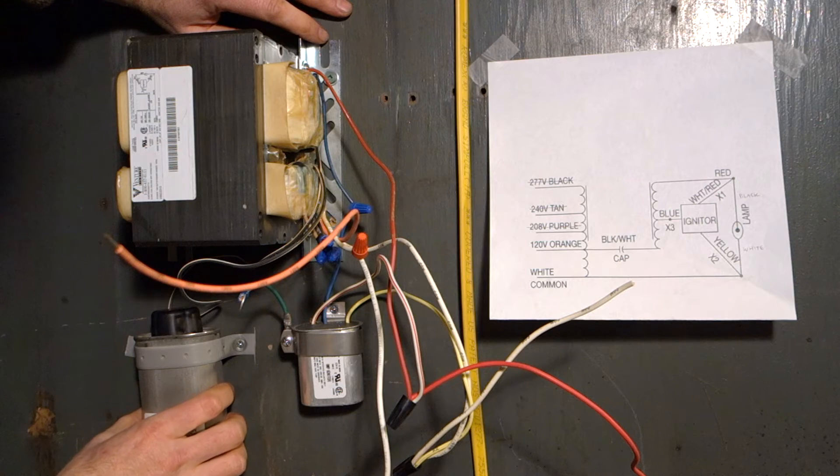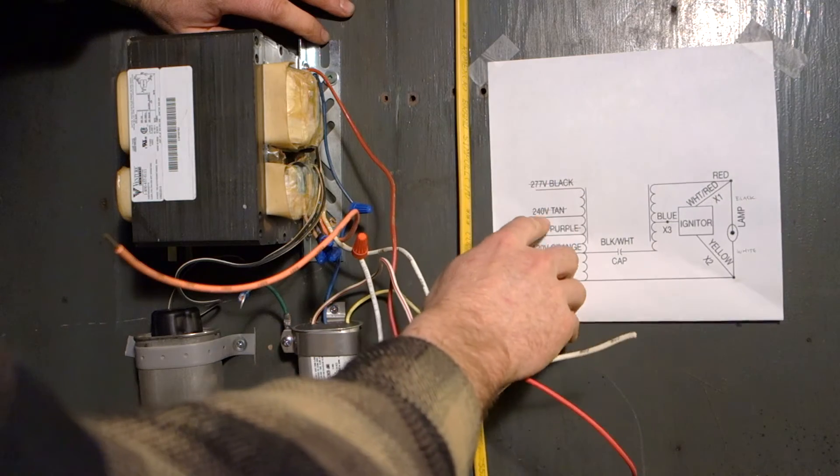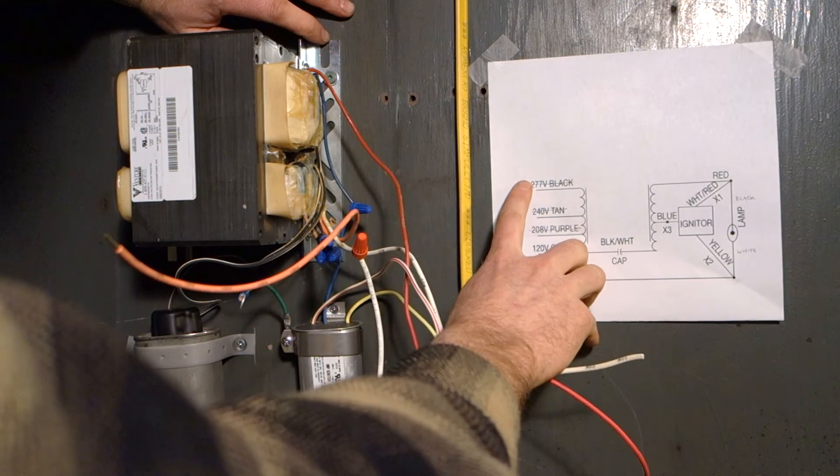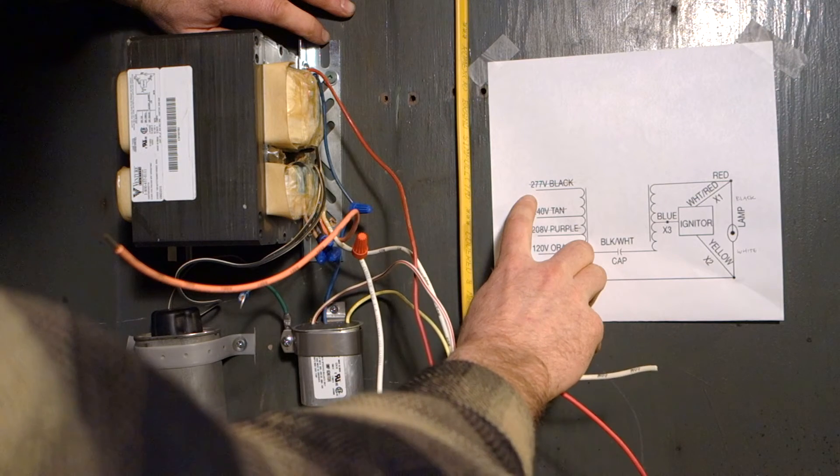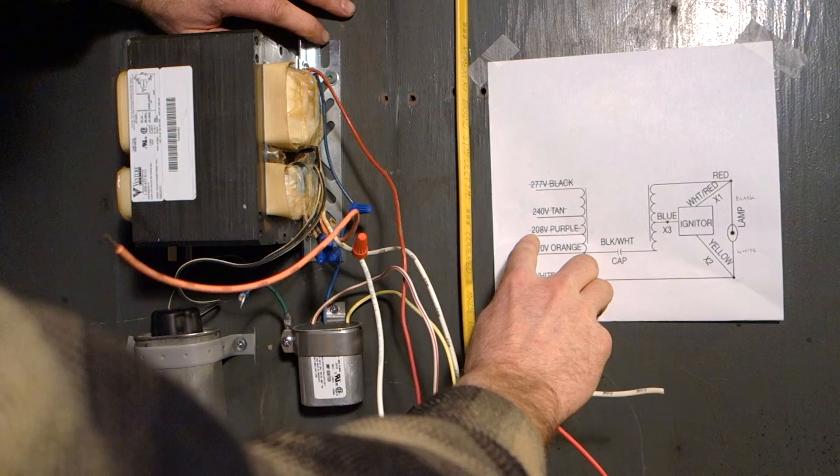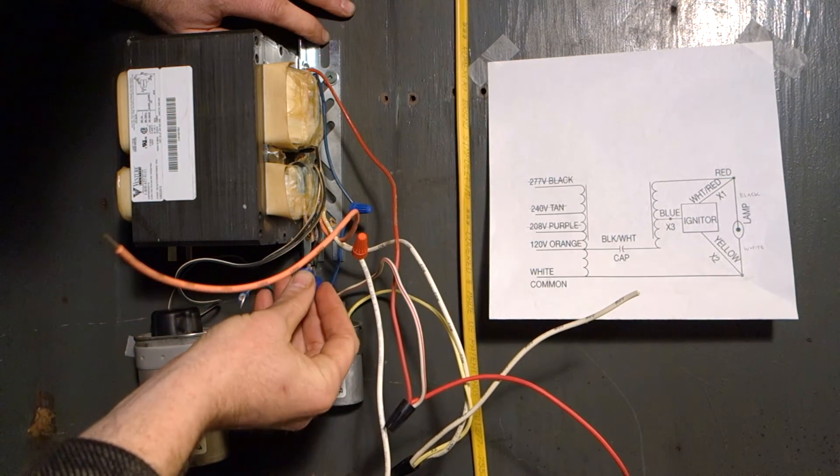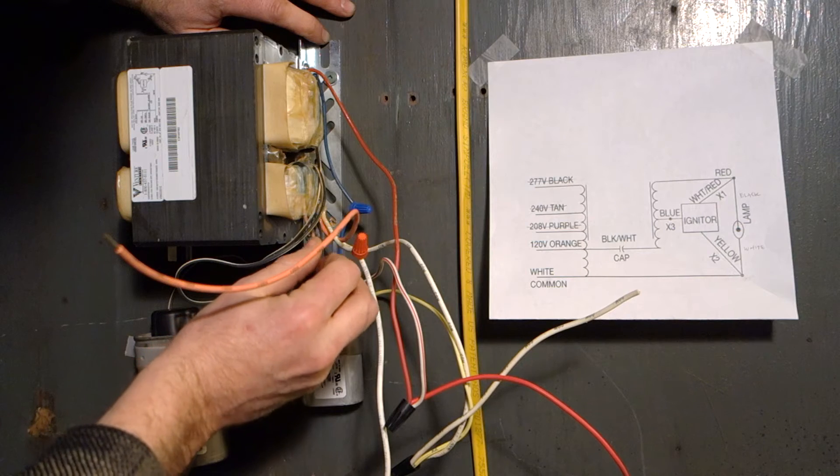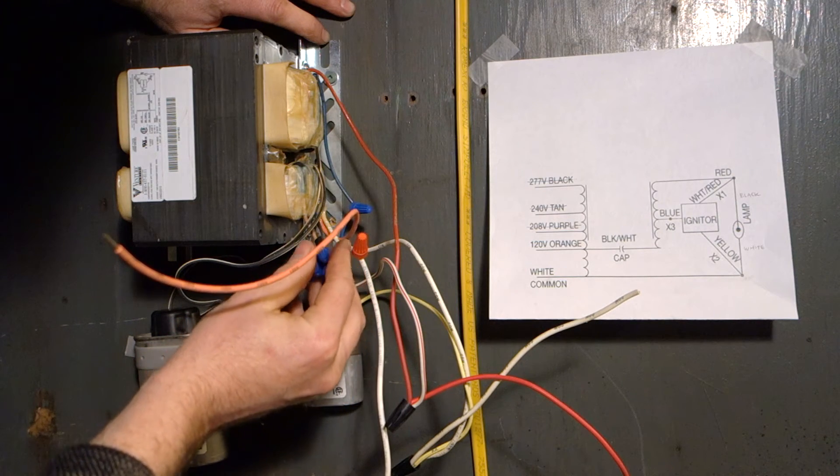This obviously is the capacitor. We went over in the wiring diagrams. You can see here, there are three wires that we're not going to use: the 277 volt black, the 240 volt tan, and the 208 purple. I cut these back because I doubt that I'm ever going to use them. Cut them kind of short and just tied them off to get them out of the way.